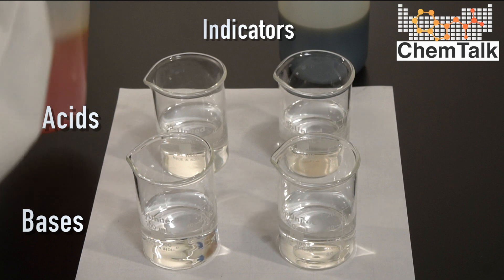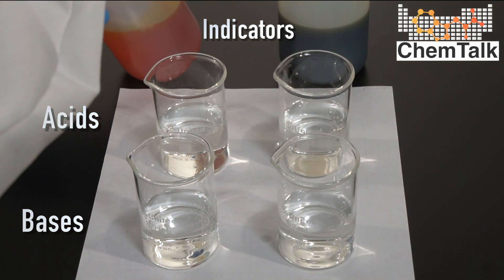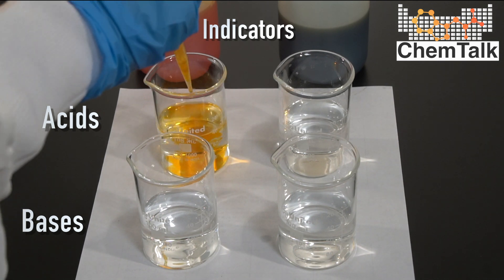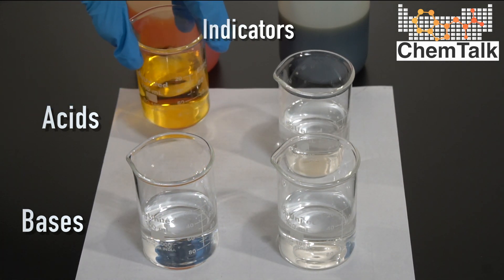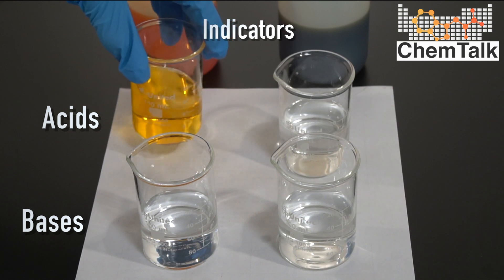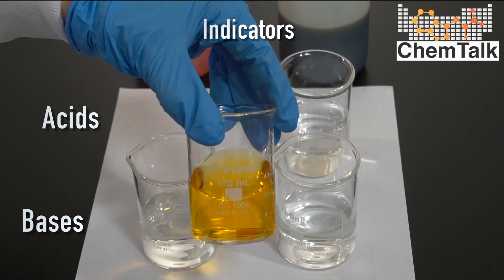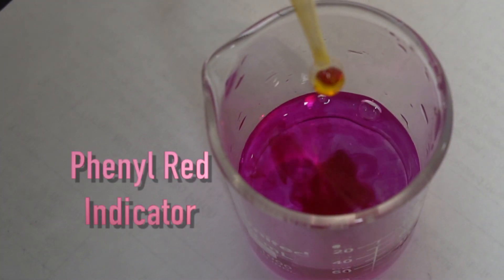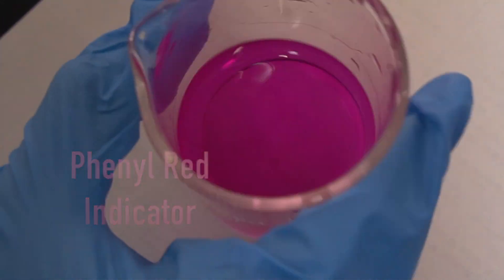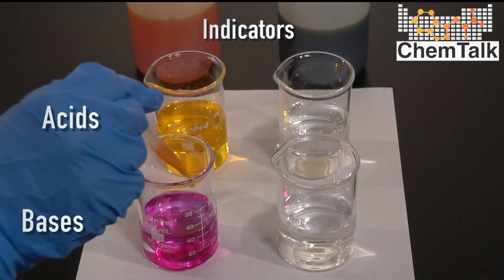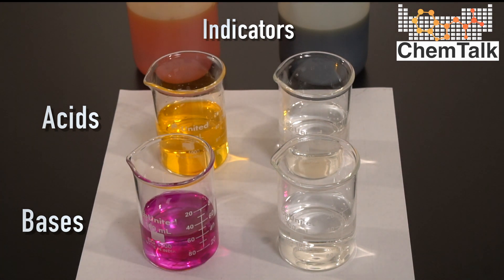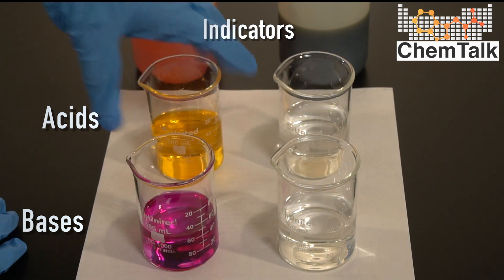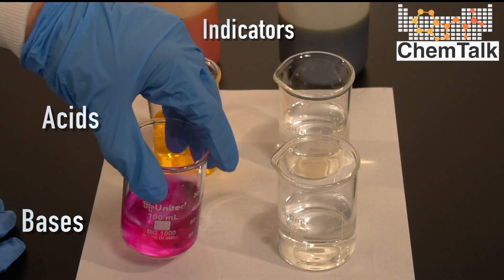So first I'm taking the phenol red, drop a bit into the acid, swirl it around a little. So we have an orange yellow color here for the acid. And now let me drop the same indicator, the phenol red, into the potassium hydroxide solution. And that's very different, right? Now we have this deep purple color. So for the phenol red in acid, we have a yellow orangey color and in base, we have purple.